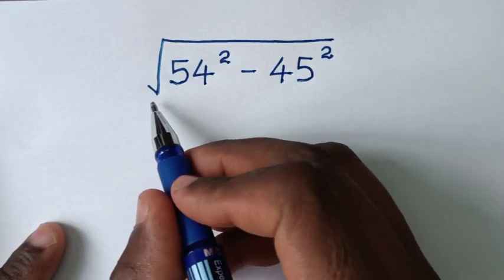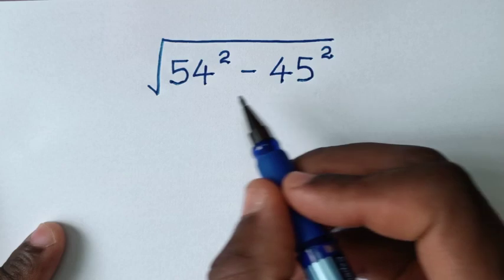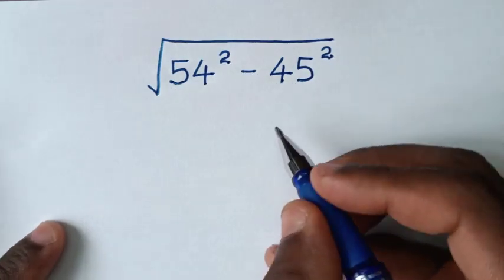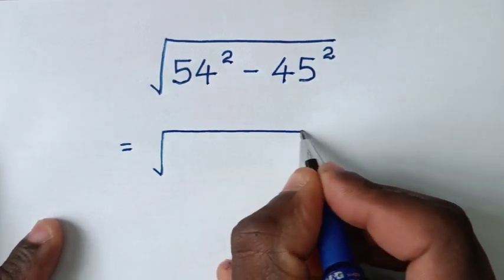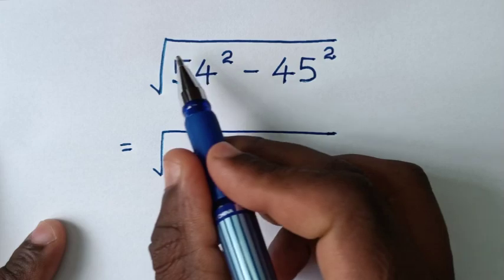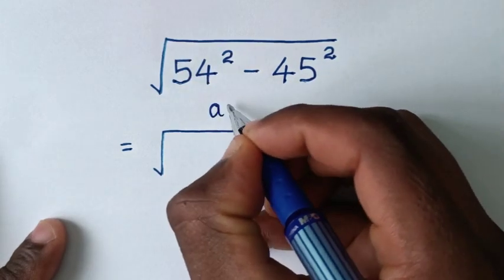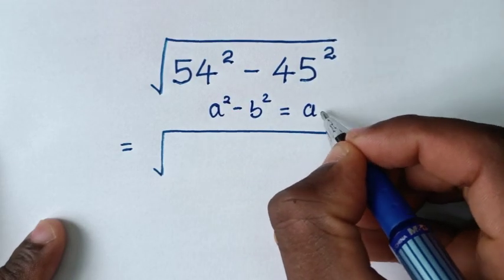Hello, you are welcome to solve this math problem which is square root of 54 squared minus 45 squared. So it will be equal to square root of this expression here. Under square root is in the form of a perfect square, so we will apply a perfect square root which is a squared minus b squared is equal to a plus b bracket times a minus b bracket.